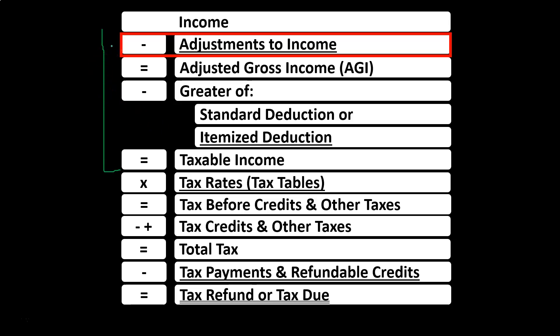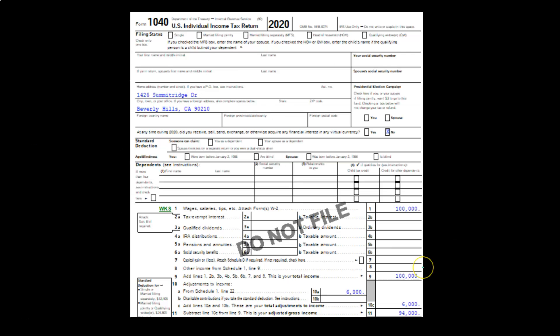We're going to be considering a component of these adjustments to income — probably one of the most common components and one that most tax preparers will be asking questions about to their clients even up until the tax preparation deadline, and possibly being able to do some planning even all the way up to when you're actually doing the tax return. Here is the Form 1040 — I want to see the whole 1040 on one page so we can see the context of it.